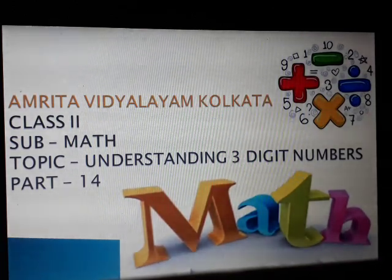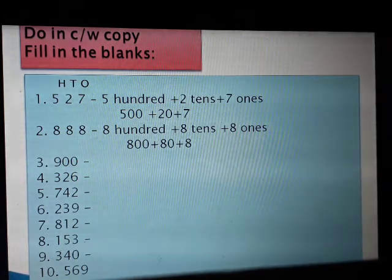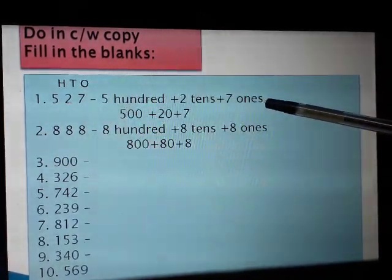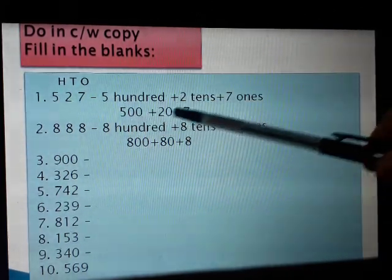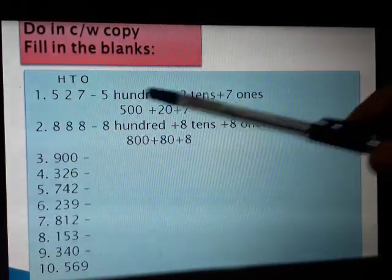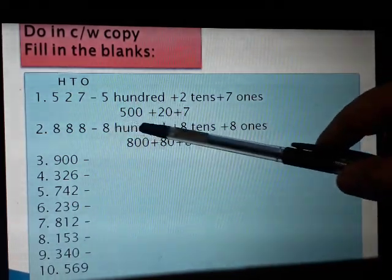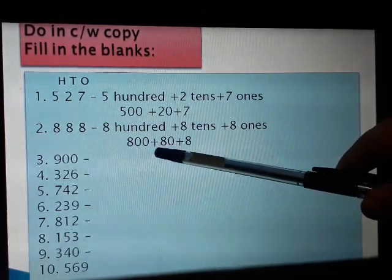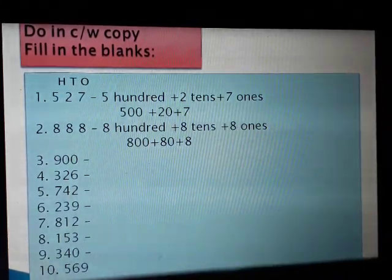Now in this video you will see — you have to write this in your classwork copy. You can see here 5-2-7: in word form, 500 plus two tens plus seven ones; in figure form, 500 plus 20 plus 7. Eight hundred eighty-eight: in word form, 800 plus eight tens plus eight ones; in figure form, 800 plus 80 plus 8. Some more sums are there which you are going to write in your classwork copy.